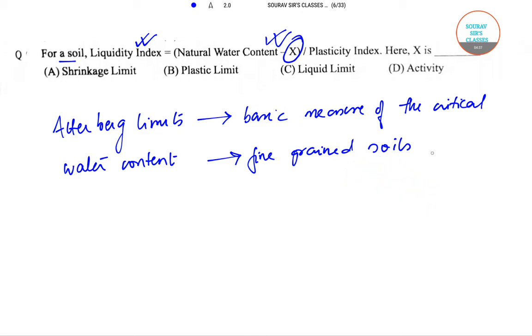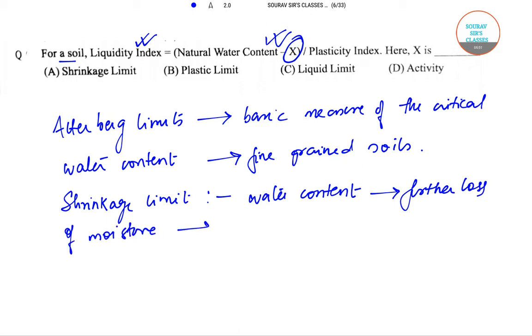Now there are two kinds. Shrinkage limit: shrinkage limit is the water content where further loss of moisture will not result in any more volume reduction.